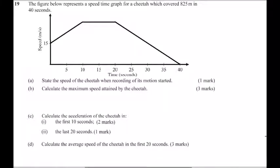Question number 19: we are told the figure below represents a speed-time graph for a cheetah which covered 825 meters in 40 seconds. The vertical scale represents speed and the horizontal scale represents time. Part A: state the speed of the cheetah when recording of its motion started. Looking at the graph, at the y-axis, the speed was 15 meters per second when recording started.